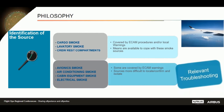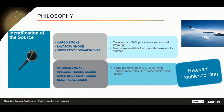Concerning the identification of the source: some sources of smoke and fumes are easy to locate because they are either in accessible areas or monitored by smoke detectors, triggering ECAM alerts or local warnings. Other sources, such as avionic smoke or air conditioning smoke, are more difficult to locate and confirm at 100% because they are not necessarily monitored by smoke detectors. For these events, we provide relevant troubleshooting procedures.